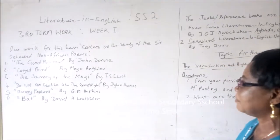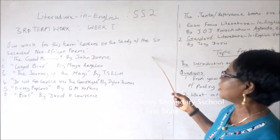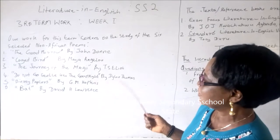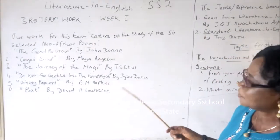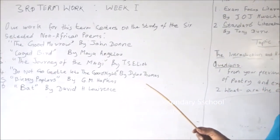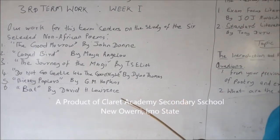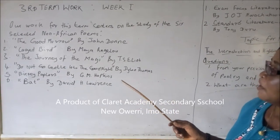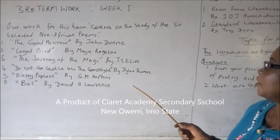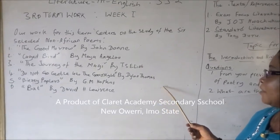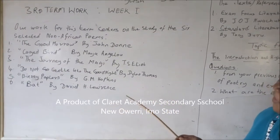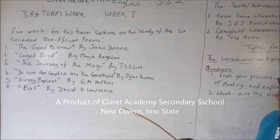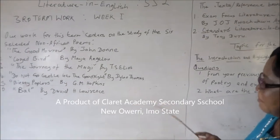Our work for this term centers on the study of the six selected non-African poets. One, The Good Moral by John Doan. Two, Caged Bed by Mayor Angelo. Three, The Journey to the Magi by T.S. Eliot. Four, Do Not Go Gentle into the Good Night by Dylan Thomas. Five, Vincent Colas by G.M. Hopkins. Six, Baths by David Lawrence.